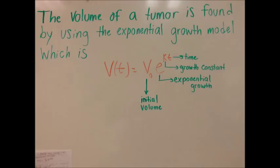The volume of a tumor is found by using the exponential growth model, which is V(t) equals V naught times e to the kt. V naught is the initial volume when time is zero, and e is the exponential growth. K is the growth constant, and t equals time.